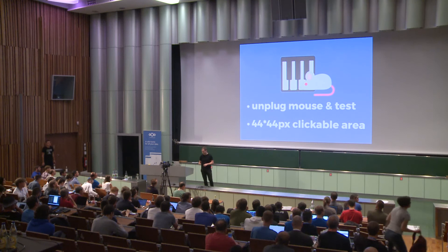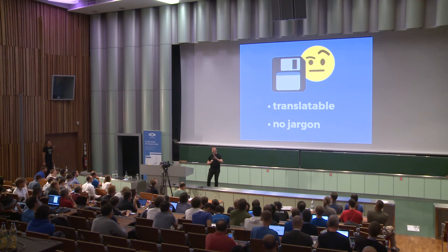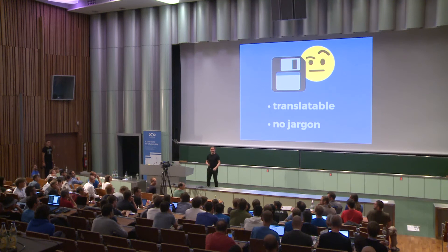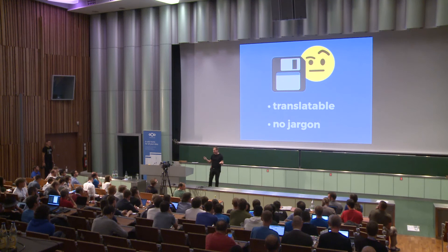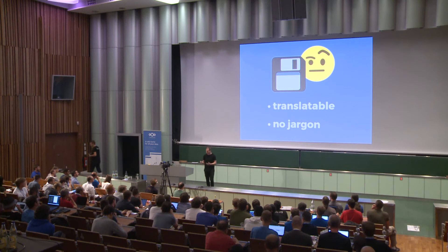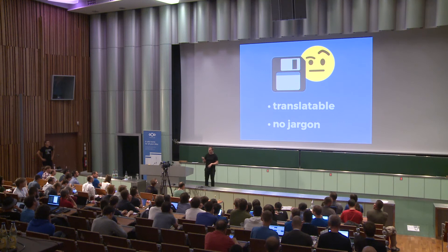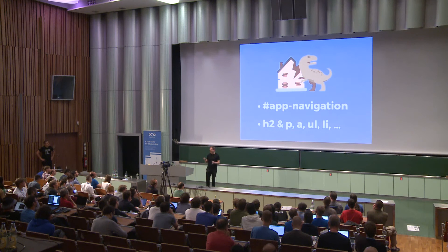The third thing is understandability. One big thing: make your app translatable — there are people who can help you with that. It's always easier for people to use an app in their own language. Also, don't use jargon: don't use the floppy disk icon to mean save, for example — no one in the generation after us even knows what a floppy disk is. And don't say URL — no one knows what that is; just call it a link.